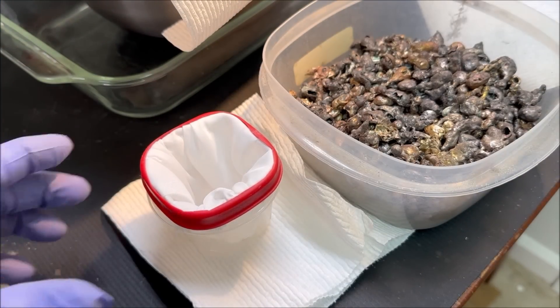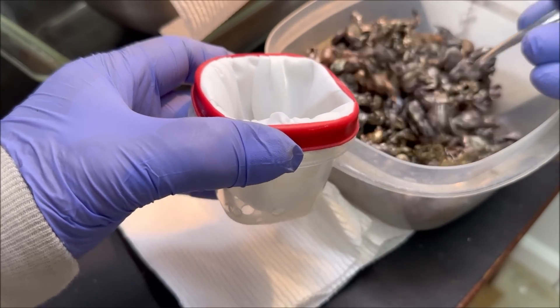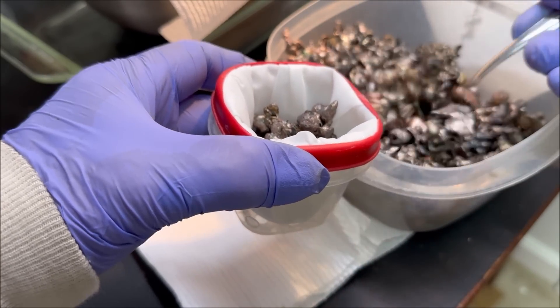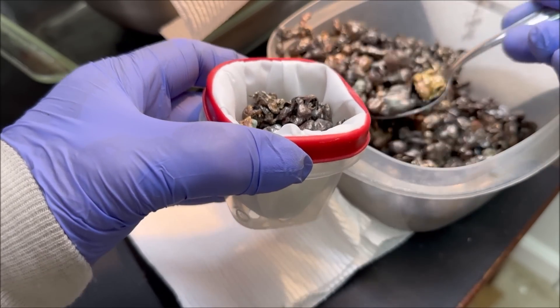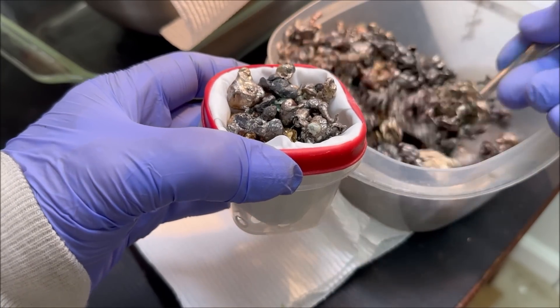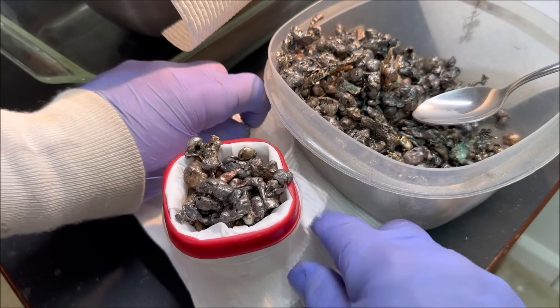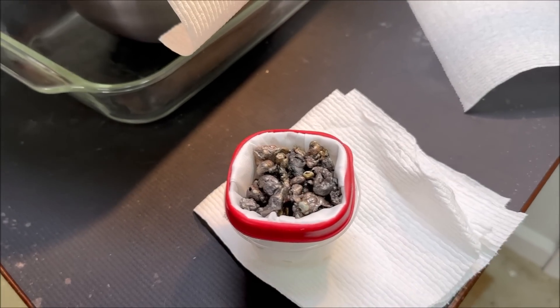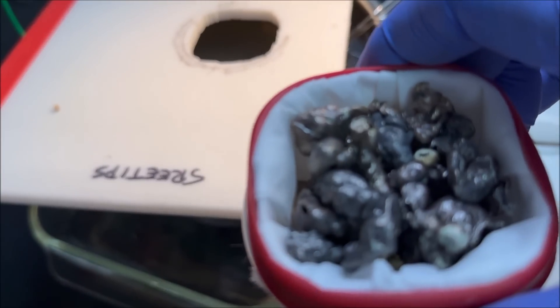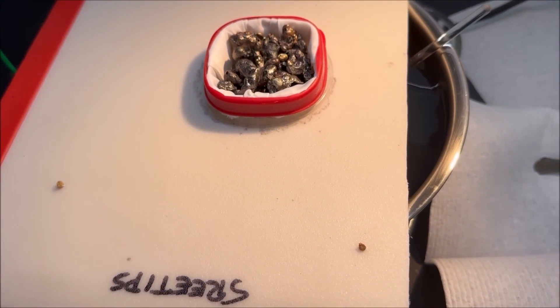Now we'll charge the anode basket with some impure silver. This is cement silver that's been melted into these granules and then poured in water to form these pieces like this, present a greater surface area to the electrolyte. We'll take the cover off the silver cell and we're going to submerge the anode basket down into the electrolyte. We'll cover this back up.